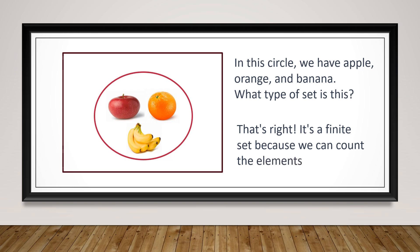What type of set is this? That's right — it is a finite set because we are able to count the elements. We have one apple, one orange, and one, two, three, four, five bananas. So in this set we have seven elements or seven members.